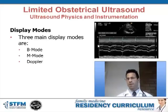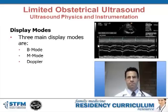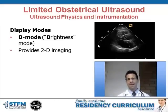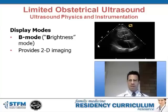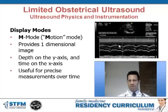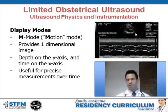There are different display modes. The three most relevant to our applications are B mode, M mode, and Doppler mode. B mode, or brightness mode, is typically what you think of when you think of ultrasound imaging — it's two-dimensional imaging that shows a structure's anatomy. M mode, or motion mode, provides a one-dimensional image.